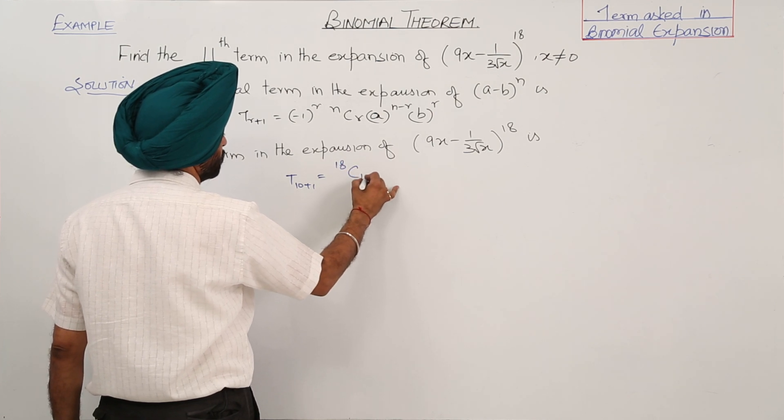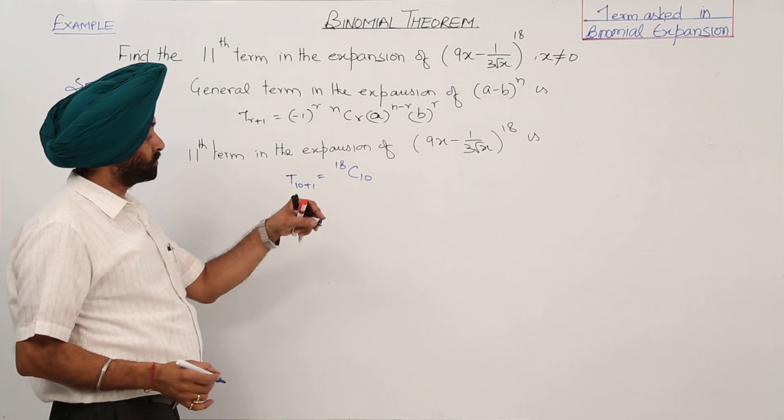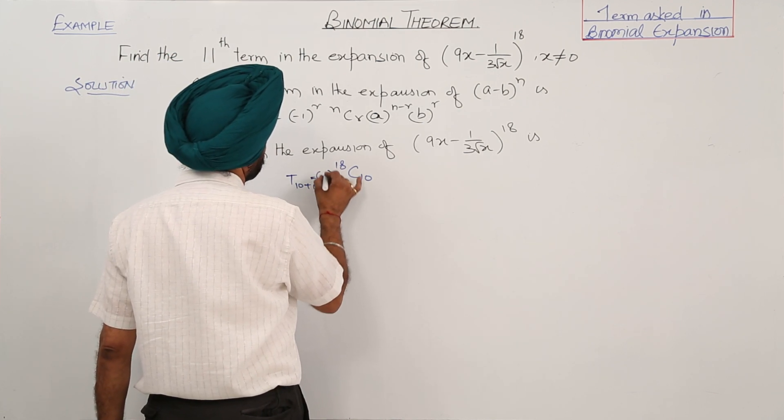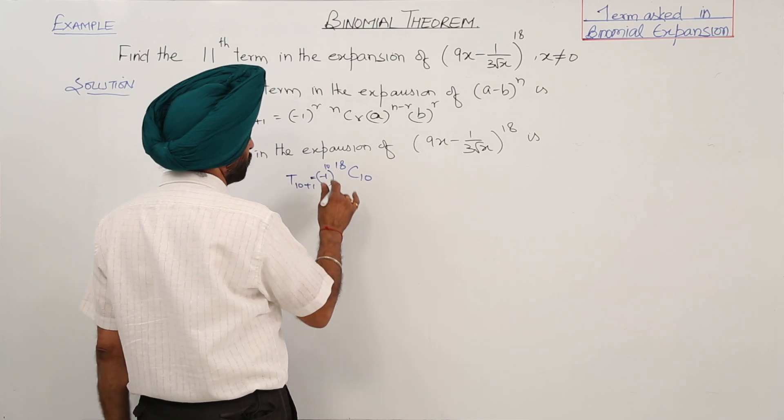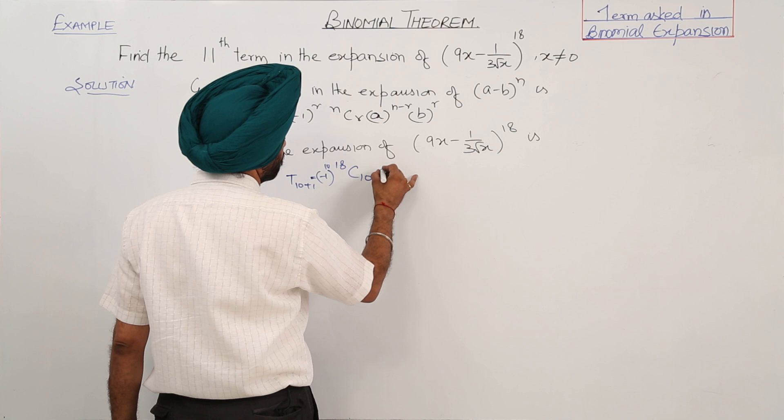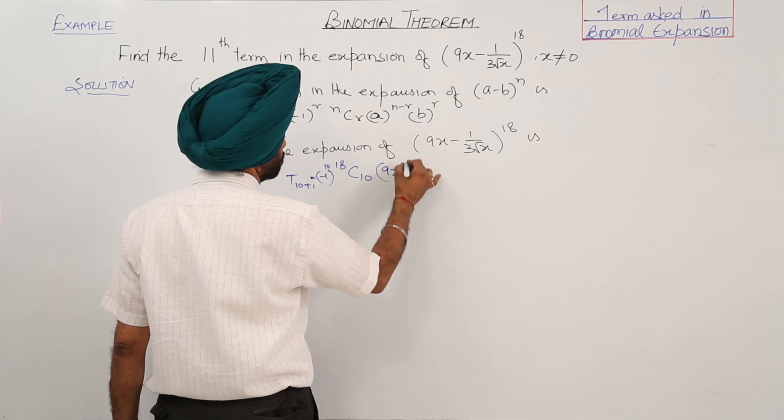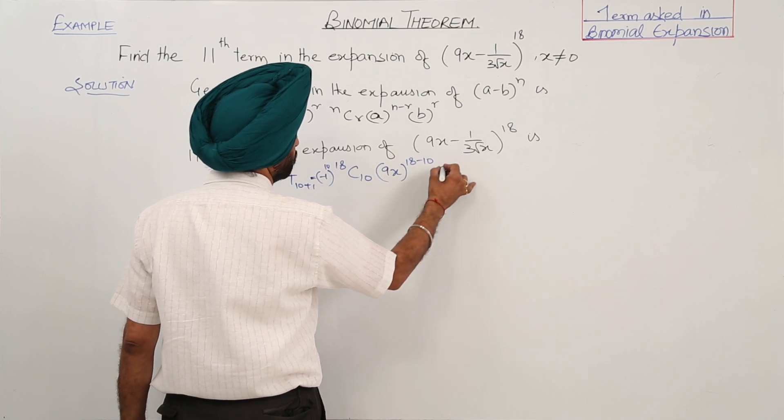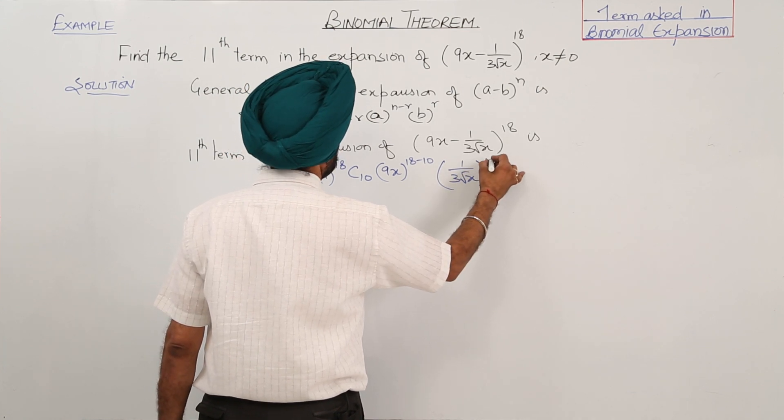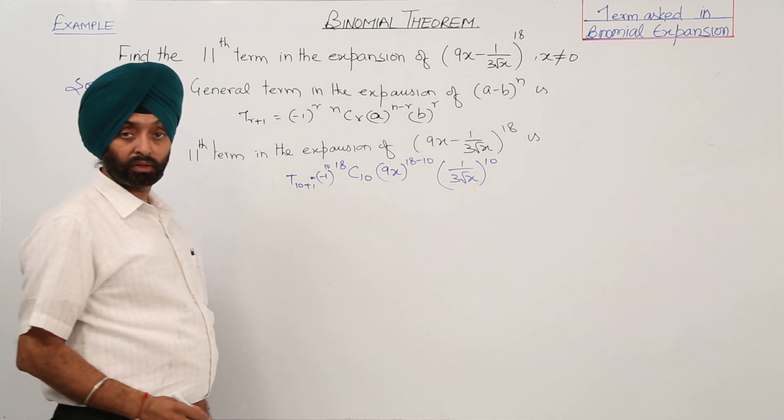Using this formula, it is equal to (-1) raised to power 10, then 18C10, what is a? 9x raised to power (18-10), and 1/(3√x) raised to power 10.